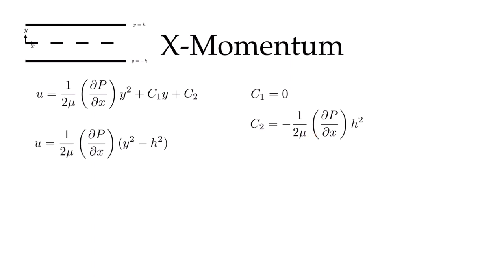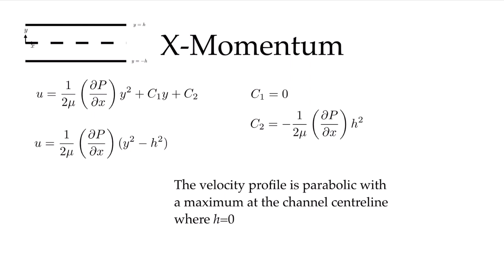Substituting the constants into our expression, we can simplify to get the velocity profile: u = (1/2μ)(dp/dx)(y² − h²). This is a quadratic — parabolic — in y. When y = 0, this gives the maximum velocity. Since it's negative h² and the flow must be positive, dp/dx must be a negative constant: higher pressure at the inlet driving flow toward lower pressure at the outlet.